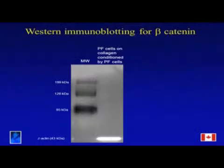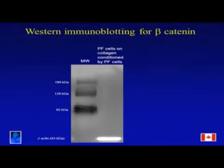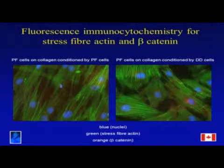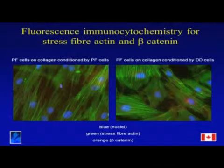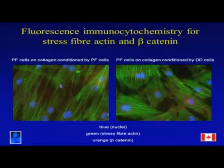We've done this experiment several times and the answer is clear. Palmar fascia cells growing on collagen conditioned by palmar fascia cells express virtually no beta-catenin — which is what we standardly see when we grow cells in collagen for more than seven days. Palmar fascia cells growing on collagen conditioned by Dupuytren's disease cells show a marked upregulation of beta-catenin, with beta-actin controls confirming equal protein loading. Fluorescent immunochemistry also showed changes in stress fibre condensation — phalloidin staining revealed upregulated stress fibre actin in cells grown on Dupuytren's disease-conditioned collagen, which also displayed upregulated beta-catenin around the nucleus.